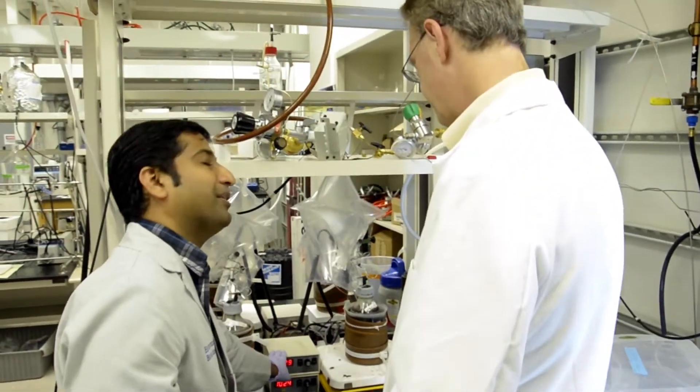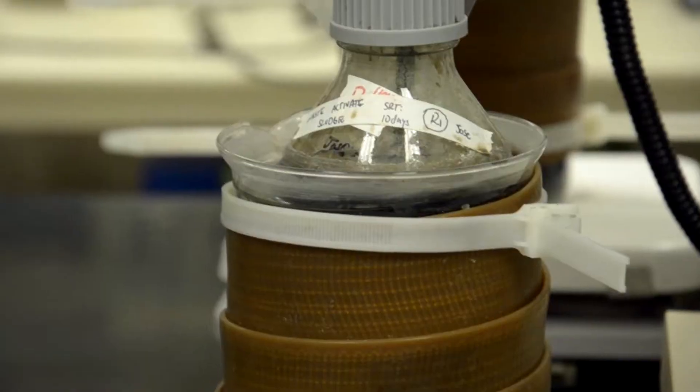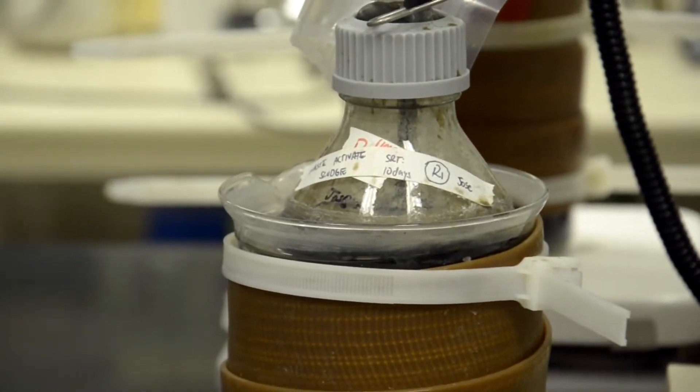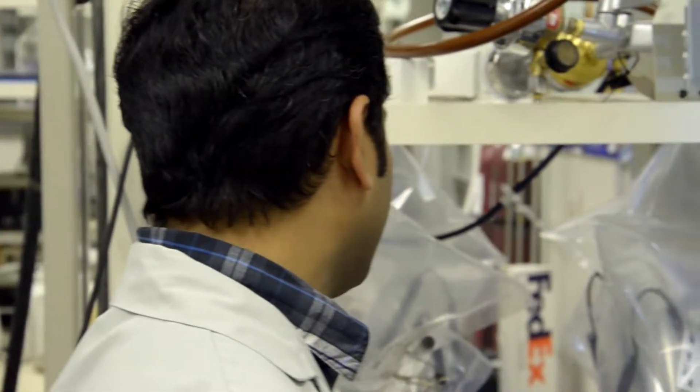In an activated sludge process, the organisms take and use almost all the energy, leaving nothing for us. What we do is we use a different set of organisms with different conditions so that they'll just take a little bit of the energy and they'll convert most of it into forms that are useful to us.